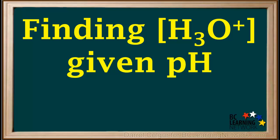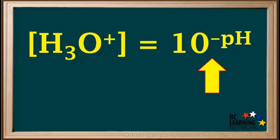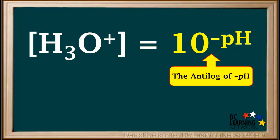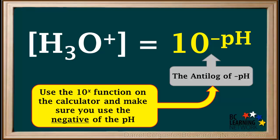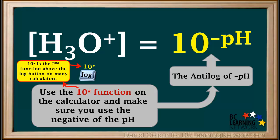Sometimes we'll be given the pH of a solution and asked to find the hydronium ion concentration. To do this, we use the formula: concentration of hydronium is equal to 10 to the negative pH. This is called the anti-log of the negative pH. When using this formula, use the 10 to the x function on the calculator and make sure you enter the negative of the pH value. The 10 to the x function is the second function above the log button on many calculators.